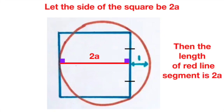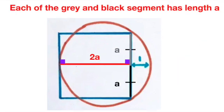If we let the side length of our square be 2a, then our red line segment, being parallel to the sides of a square, must have length 2a as well. Each of the grey and black line segment has length a, being bisected by our red line segment earlier.